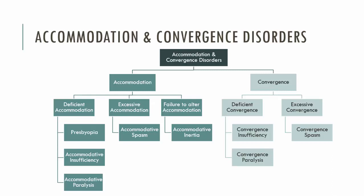Here I've provided you with a flowchart which summarises the various conditions that relate to disorders of accommodation and convergence. Starting off with accommodation, we can either have conditions that relate to deficient accommodation, excessive accommodation, or a failure to alter accommodation.